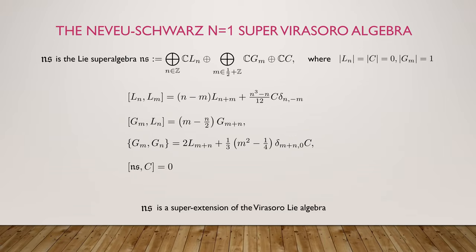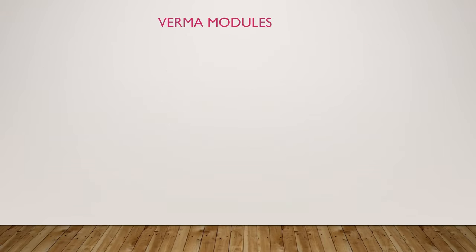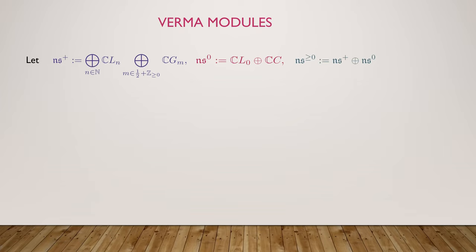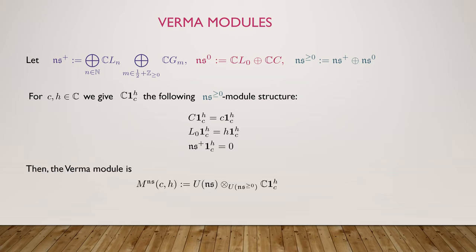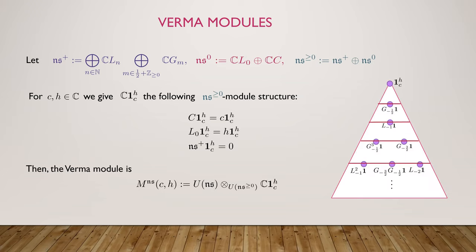It is a super extension of the Virasoro algebra, and we're going to build Verma modules. We fix a triangular decomposition: the positive part of the N equals 1 algebra, the zero part, and the non-negative part. We define the highest weight representation by taking a one-dimensional vector space, giving it a zero-module structure by letting the central element act as scalar C and L_0 act by scalar H. All the positive part acts by zero, and we induce to get the Verma module.